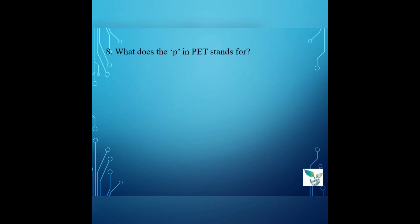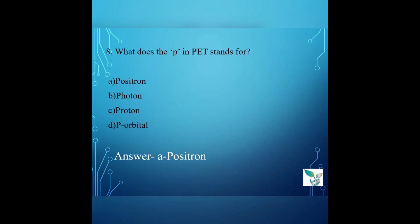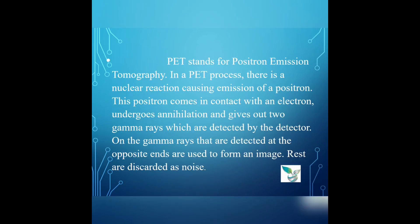Question number 8: What does the P in PET stand for? Option A: positron, Option B: proton, Option C: proton, Option D: orbital. The answer is Option A, positron. PET stands for Positron Emission Tomography. In the PET process, there is a nuclear reaction causing emission of a positron. This positron comes in contact with an electron, undergoes annihilation, and gives out two gamma rays which are detected by the detector at opposite ends and used to form an image. The rest are discarded as noise.